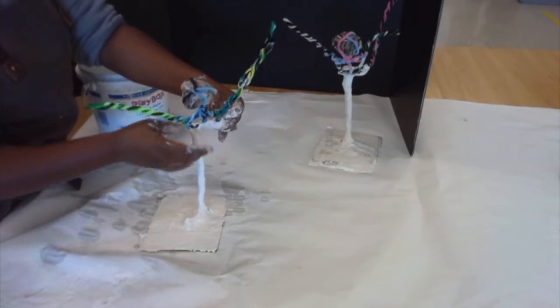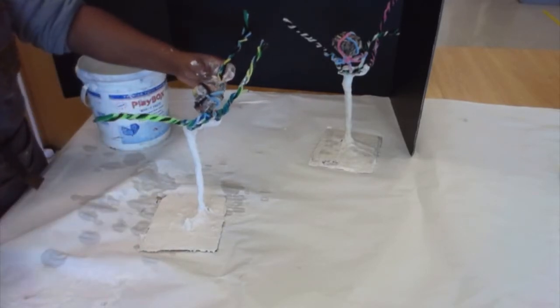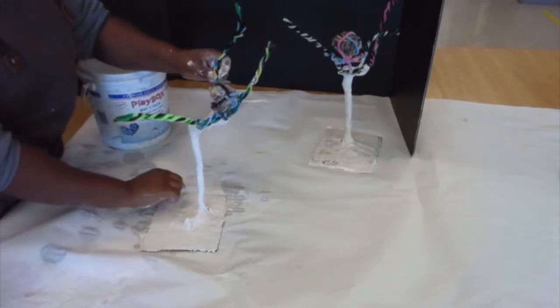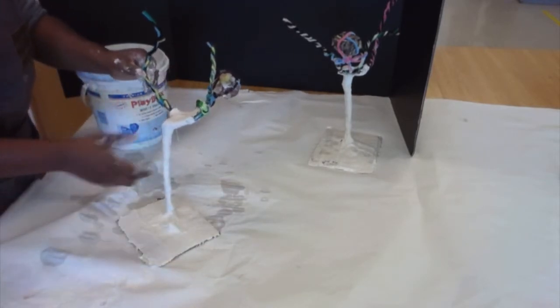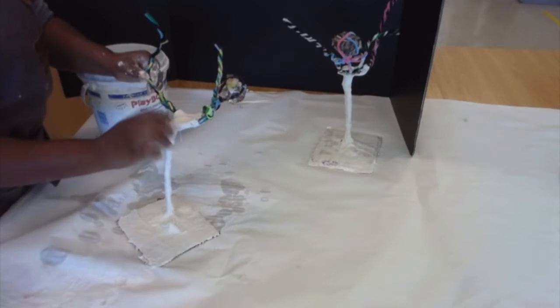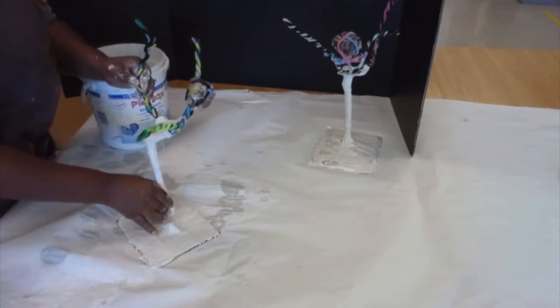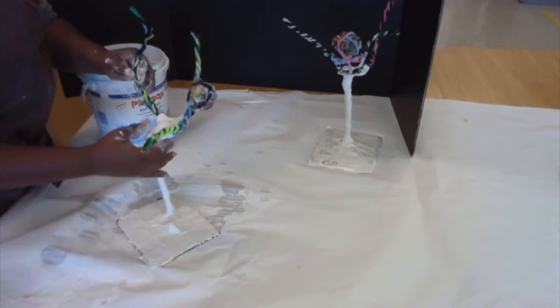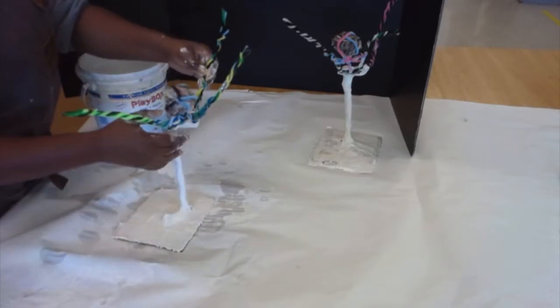Now, before we let the plaster set all the way, we need to make sure that our body is standing the way we want it to be. Like, is the angle of your torso and your leg in the position you want it to be? For example, if I wanted this standing straight up, I would have to bend it straight up right now. Right now, my sculpture is standing almost in the position I need it to be. I need to make sure my leg is just a little bit straighter. And I can still straighten it out because it's not 100% hard.